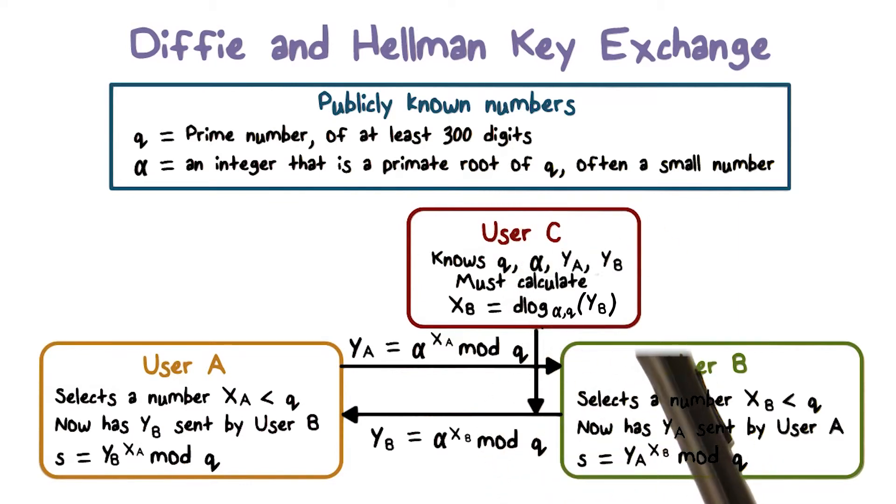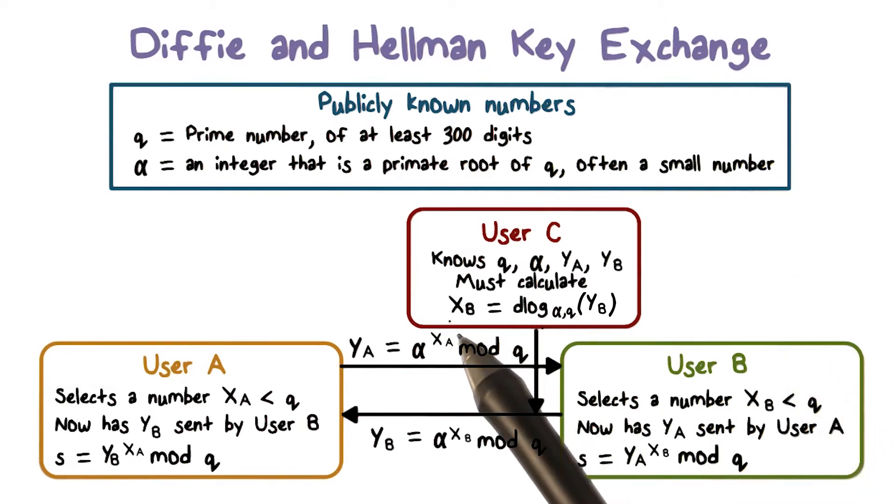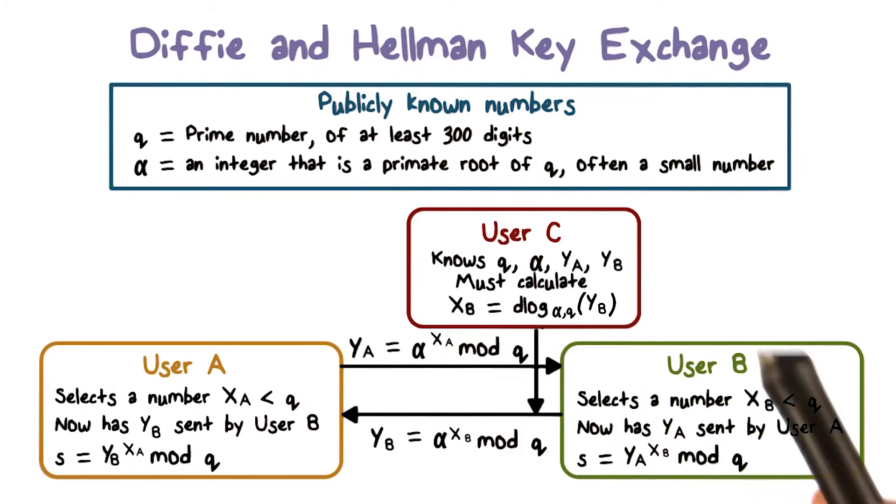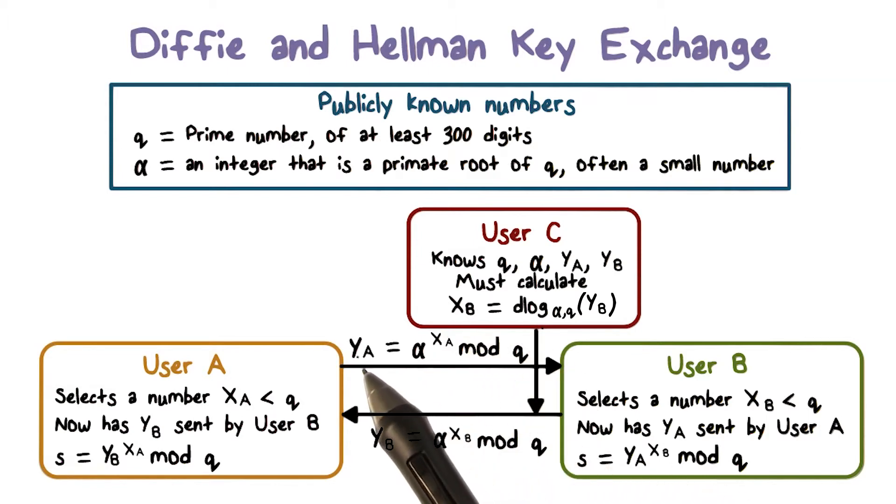If the attacker wants to compute the shared key, he must first compute the x value. For example, the attacker must compute the discrete log of yb in order to get xb. If the attacker can compute the discrete log and obtain xb, he can then compute the shared secret key by using the ya value.